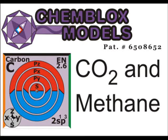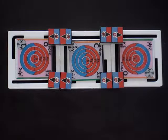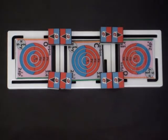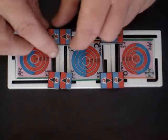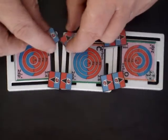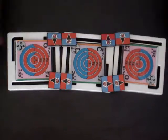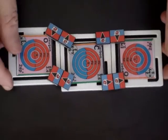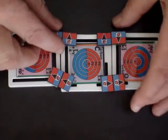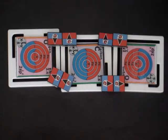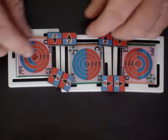ChemBlox models demonstrate CO2 vibration modes and methane combustion. Here is carbon dioxide with just the molecular bonding electrons. A pair of the CO2 bonds are in the pi bond orientation. The electrons on the carbon are in their spin-up oxidized orientation.